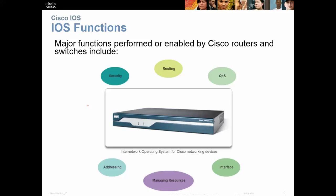Major functions that Cisco routers and switches include: security devices, routing devices, quality of service, addressing, managing resources, and interfacing. The main functions most people deal with in this course are routing and security.